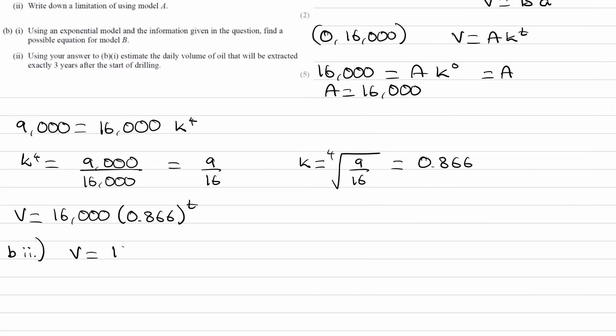This should be straightforward. You know what time is, you just want to put that into the equation. So for B part two, the volume will be equal to 16,000 times 0.866 to the power of 3. Put that in and we end up with 10,391 barrels.